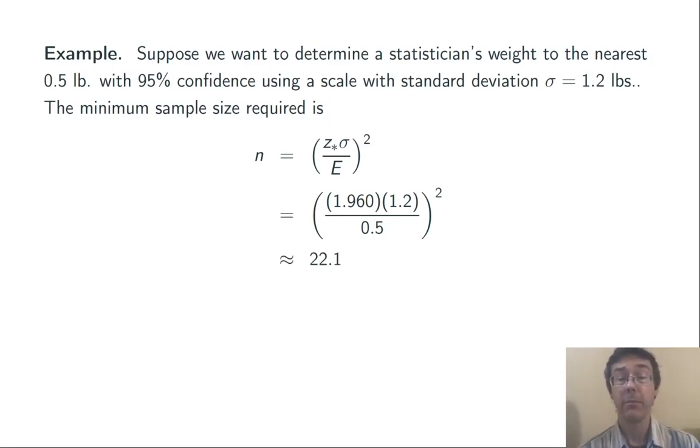Simplifying all of that, multiplying everything out, dividing, squaring, we get 22.1, which we immediately round up to 23. We have to weigh the statistician 23 times to know their weight to the nearest half pound with 95% confidence.